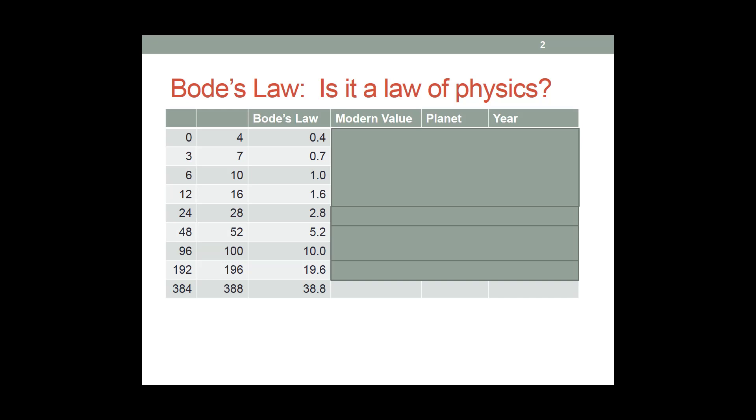The answer is no. Yeah, it made predictions. Yeah, it was testable. There's no rhyme or reason for going zero, three, double, add four, and divide by 10. No scientific basis whatsoever. It just happened to work.